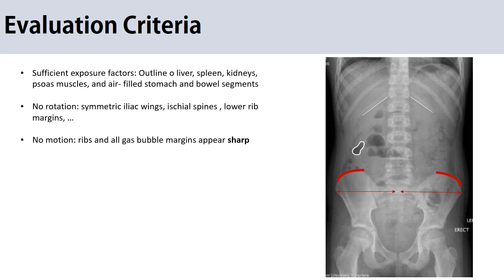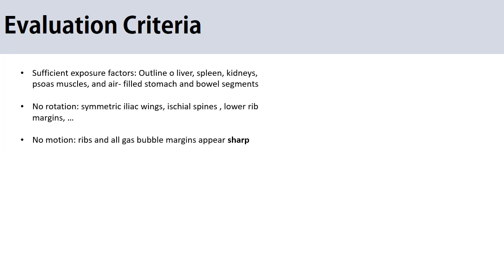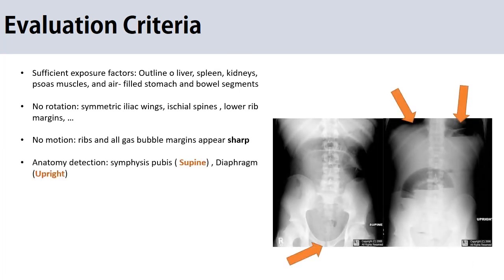To verify that the central ray was adjusted correctly, the symphysis pubis should appear at the bottom of the image in the supine x-ray, and the diaphragm should appear at the superior border of the image in the upright x-ray.